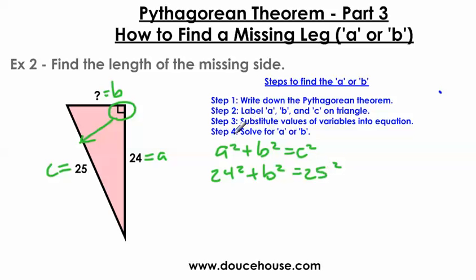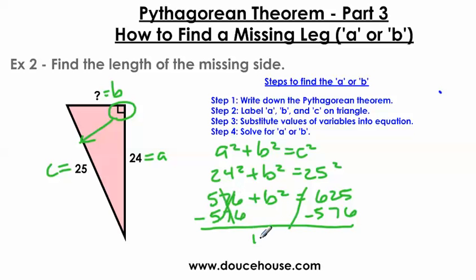24 squared is 576. We don't know what B squared is. 25 squared is 625. And again, we've got to solve for the B right now. So I've got to get B by itself. To do that, I've got to subtract 576 from both sides. And we have B by itself here. B squared equals 49.